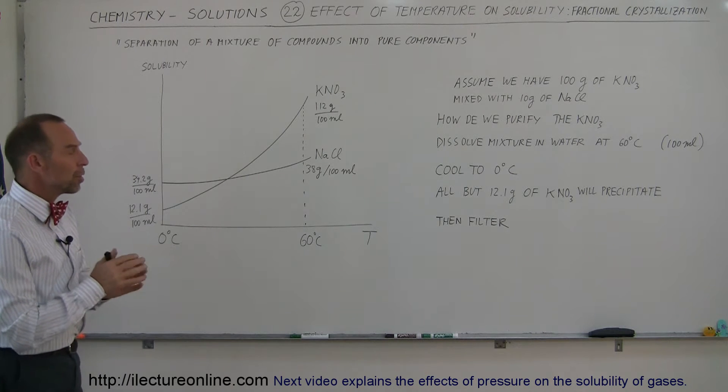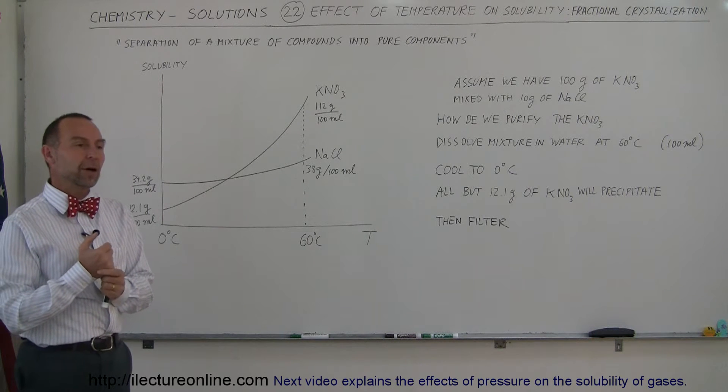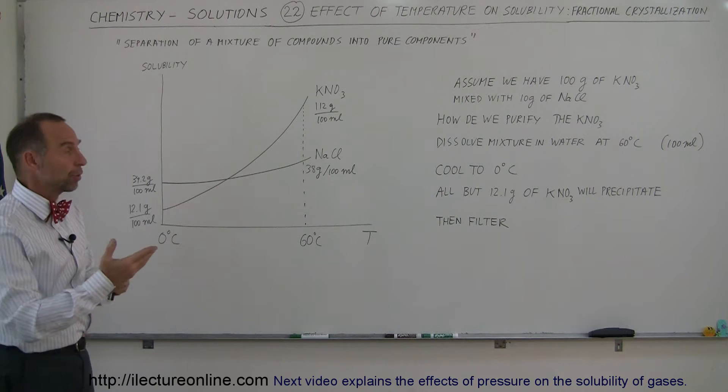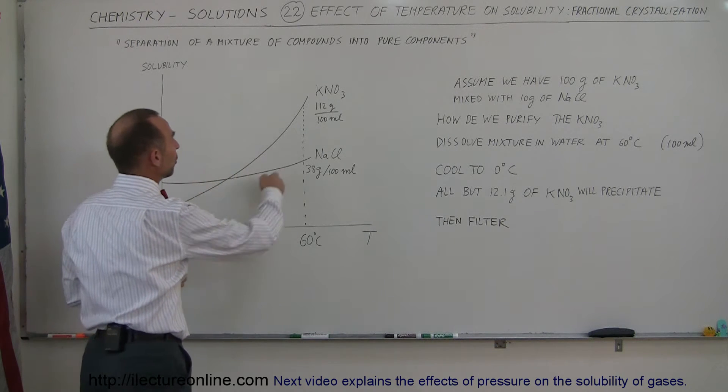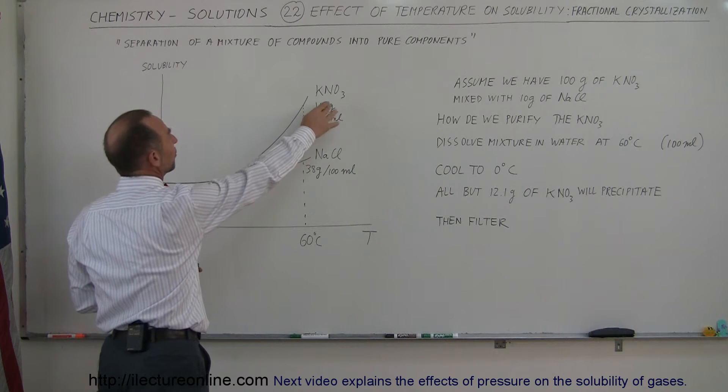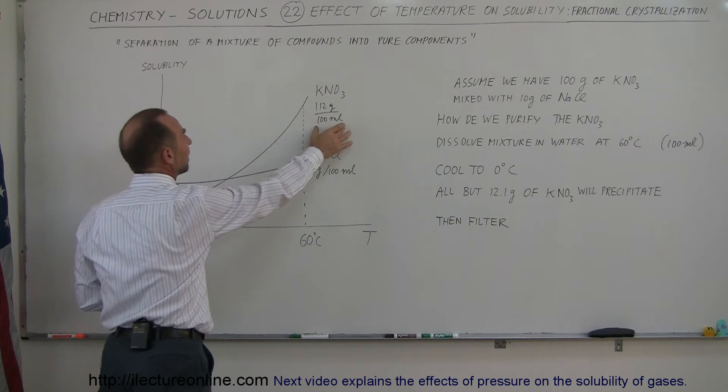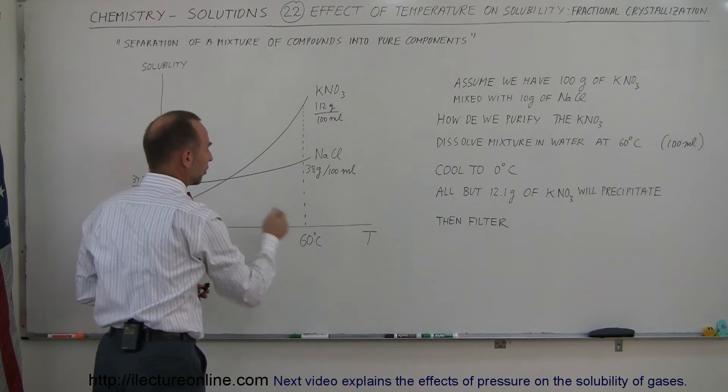We know that some compounds are affected a lot by temperature as far as solubility is concerned. For example, potassium nitrate: we can dissolve 112 grams of potassium nitrate in 100 milliliters of water when the temperature is 60 degrees centigrade.